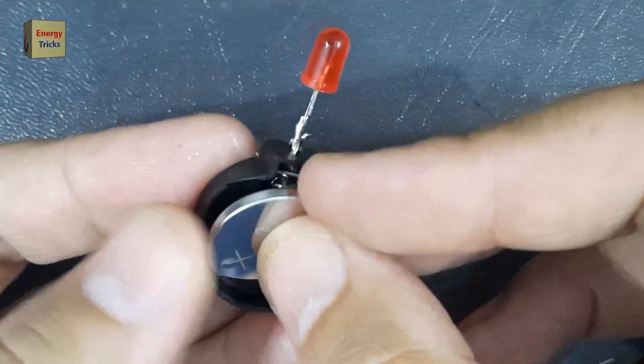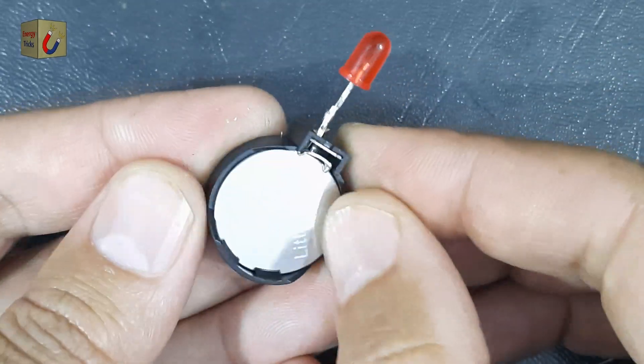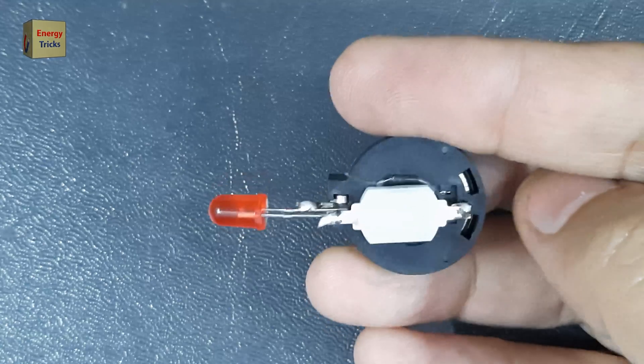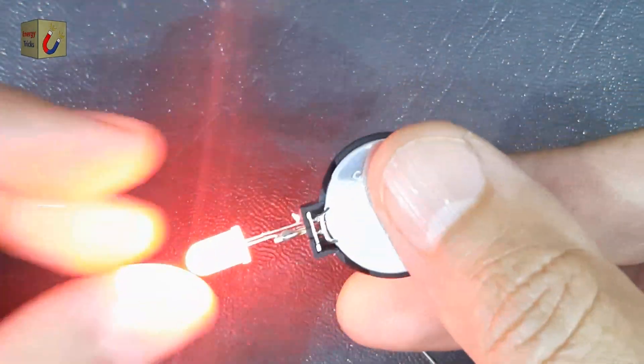Now, it's time to test our torch. I'll insert a 3-volt battery into the holder, and let's see how it works. Wow, it's working perfectly and shining brightly, just as planned.